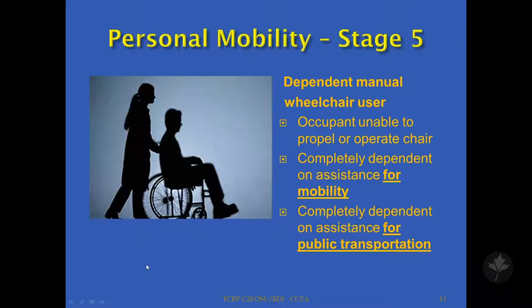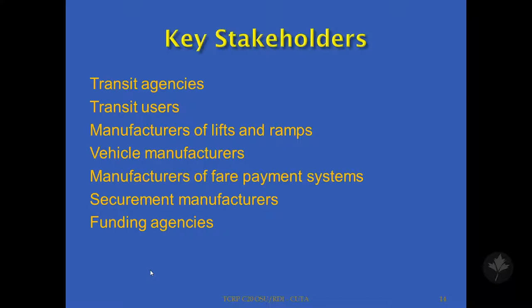At the last stage, stage five, the person is totally dependent typically on a manual wheelchair. The occupant is unable to propel or operate the chair — he or she is completely dependent on assistance for their mobility and also completely dependent on assistance for public transportation.